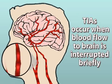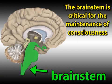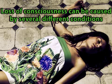Another common reason for loss of consciousness is a condition called transient ischemic attack, or TIA. In a TIA, blood flow to a piece of the brain is interrupted briefly, causing brain tissue to temporarily stop working. Some parts of the brain, such as the brain stem, are critical for the maintenance of consciousness. When a TIA affects this area, consciousness may suddenly be lost.